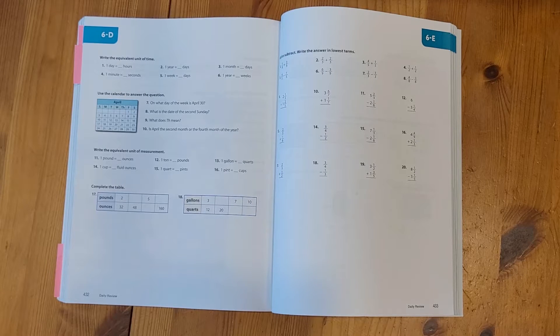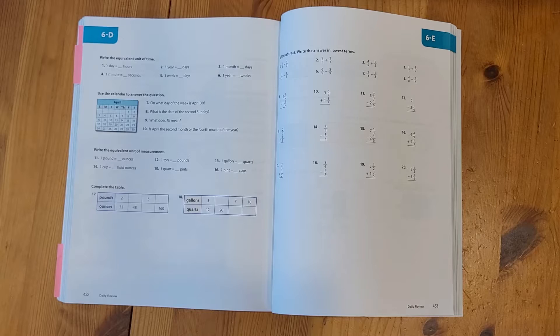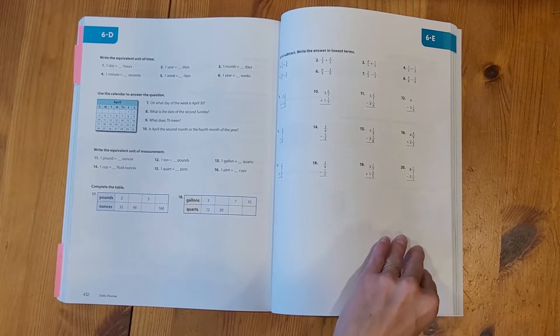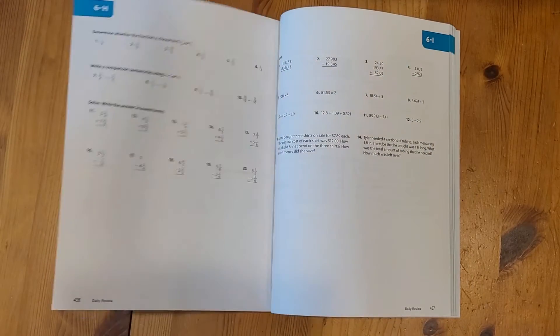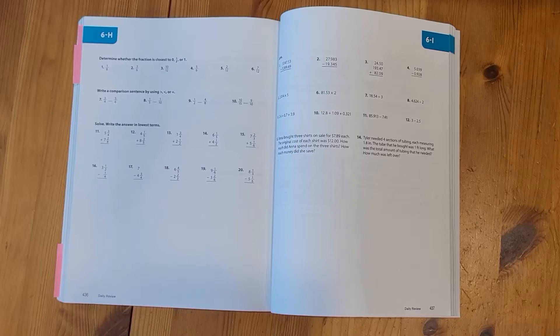If I know that my child understands this, and we can get away with just doing a couple of a review to keep it fresh in our minds, then I would assign just a couple. So it's really up to you on how you approach the reviews, and also those lessons, just based on your family's needs.